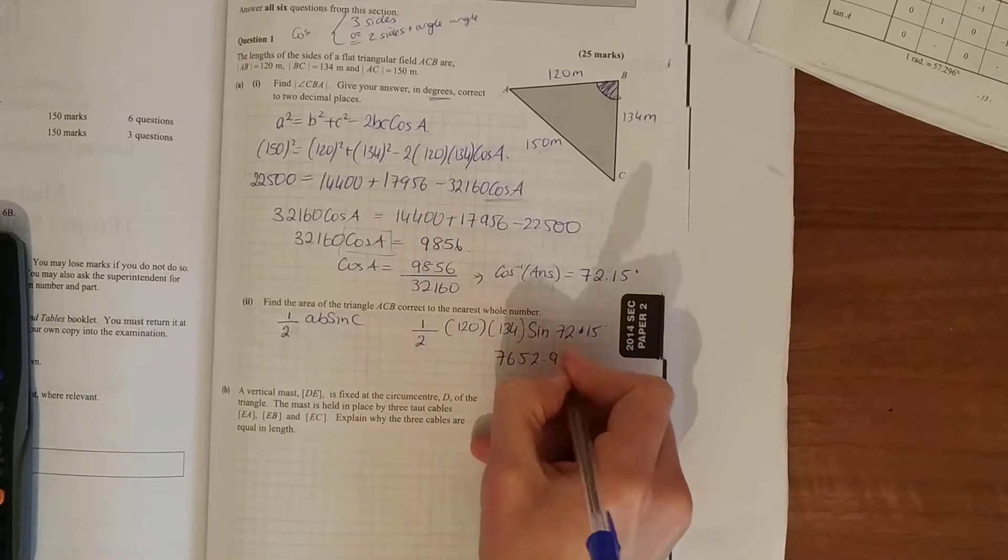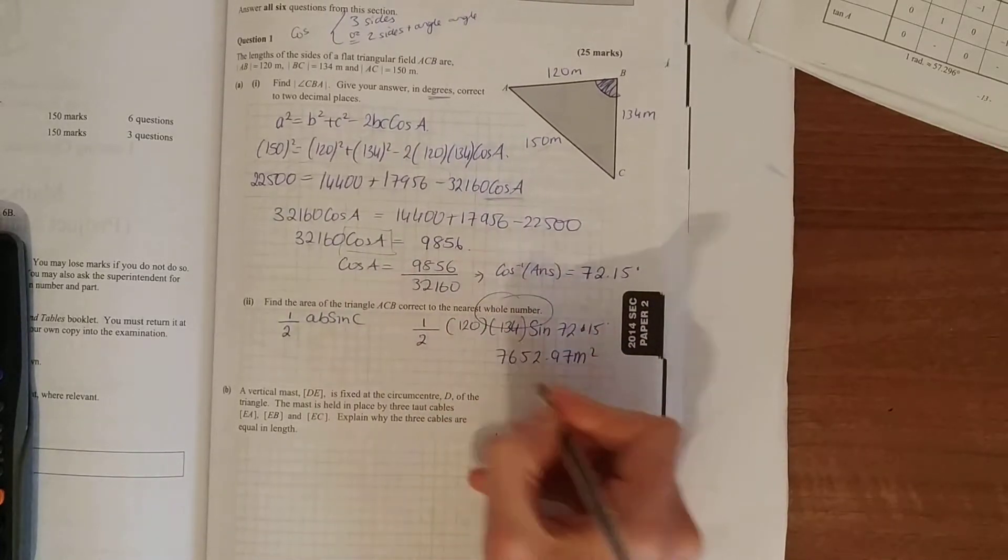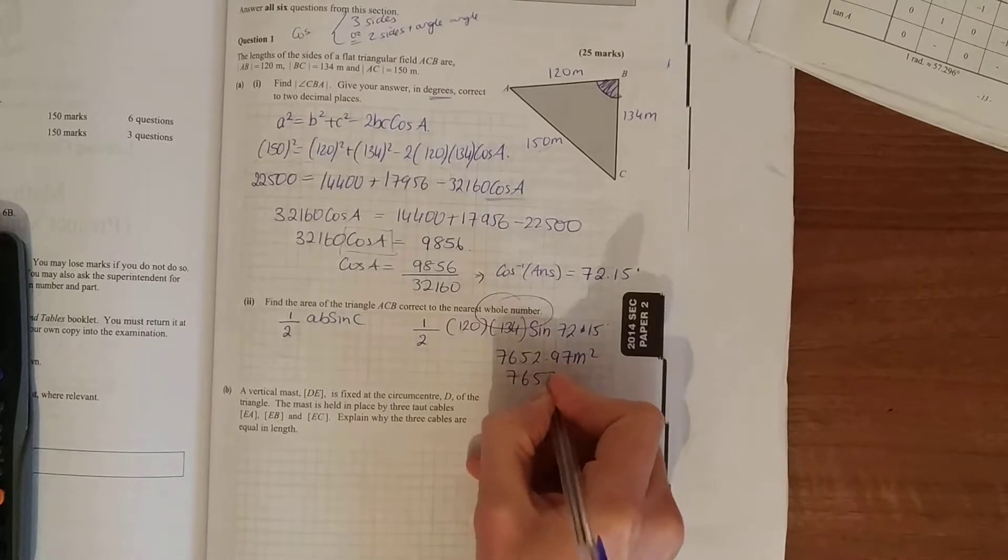And that's meter squared, and to the nearest whole number, 7,653 meter squared.